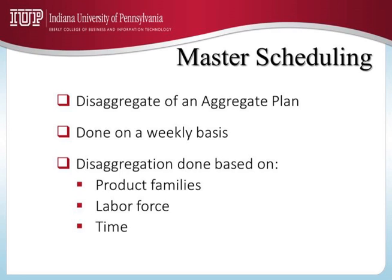Disaggregation can also be done in terms of labor force. For example, if the Aggregate Plan is for the number of IUP faculty, then the Master Schedule can disaggregate the Aggregate Plan in terms of number of faculty in the College of Business, in the College of Sciences, in the College of Fine Arts, in the College of Education, and so on. Or, if the Aggregate Plan is for the number of faculty in the College of Business, then the disaggregation can be the number of faculty in marketing, accounting, finance, management, and so on.